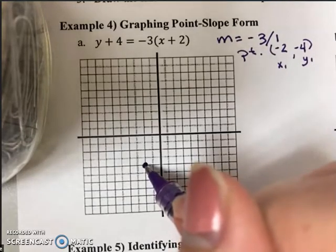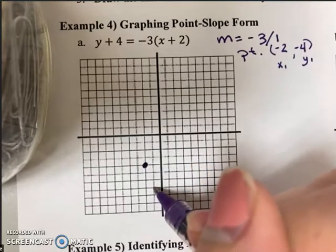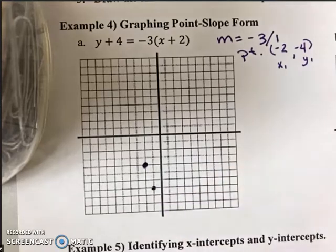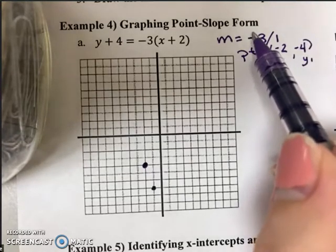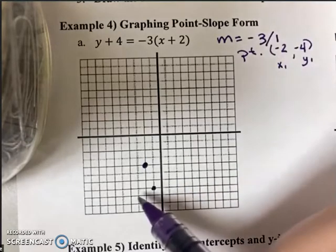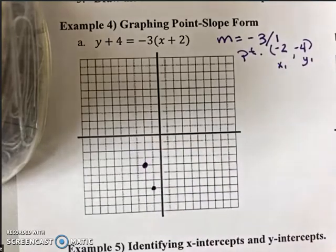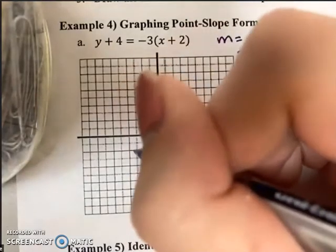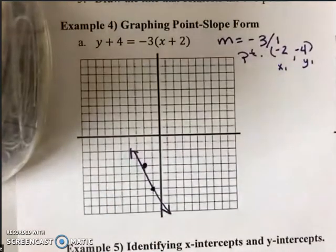Let's go ahead and do that. But starting from my point negative 2, negative 4, I'm going to move down 3 and right 1. I'm just going to make a note, and you don't have to do this if you don't want to. I could have also moved using the negative associated with the denominator. So I could have also moved up 3 and left 1 if I really wanted to, but I'm not going to. Let's go ahead and just connect the points and draw a linear function.